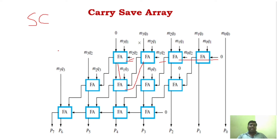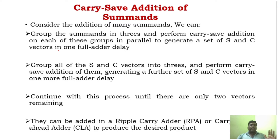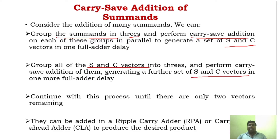The logic of carry save addition works as follows: group the summands in threes, perform carry save addition to generate sum and carry, then group the resulting sum and carry vectors and produce another sum and carry vector. Continue this process until only two vectors remain. The final two vectors are added using carry lookahead adder.